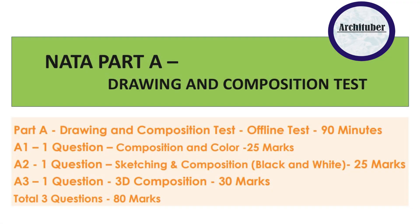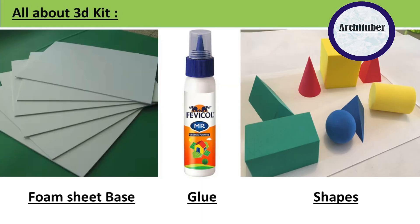Also, at the end of the video you will see two compositions that I will make for you, and we will learn together how to make this 3D composition. Now let's start with the PPT. As you can see in Part 1 we have 3 questions, and the third question is 3D composition. You will get a foam sheet base, then glue and 3D shapes. Basically you will get this foam sheet base along with these shapes and glue, and according to the question you have to make a composition using these.